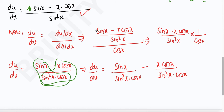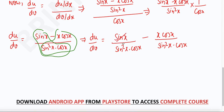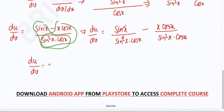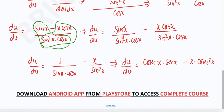You can cancel out terms here — the cos(x) in numerator and denominator cancel. You can convert using sin and cos, or using cot and cosec. The sin² gives cosec², and cos gives sec. So du/dv equals 1/(sin(x)·cos(x)) minus x/sin²(x), which can be written as cosec(x)·sec(x) minus x·cosec²(x).